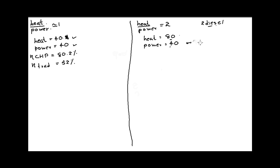Therefore, what we can do is use the same CHP plant or the same diesel engine, which will give us 40 heat units and 40 power units. We then have to find another 40 heat units somehow. In the traditional way, we used a boiler to get heat, so we can use a boiler here to get the additional 40 units. This is how we would operate when the heat-to-power ratio is increased up to 2.